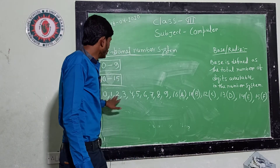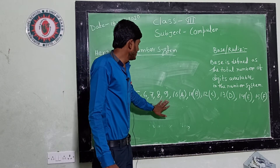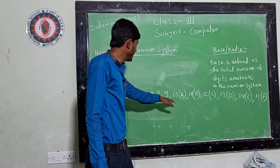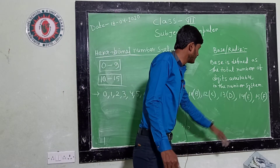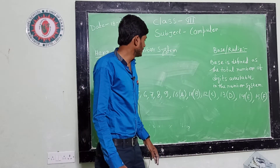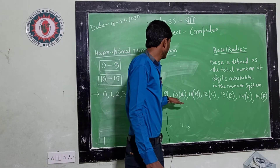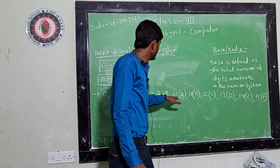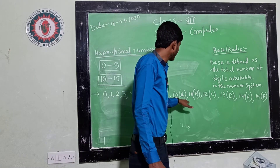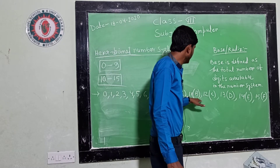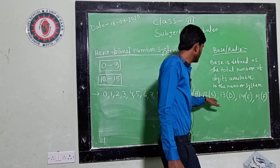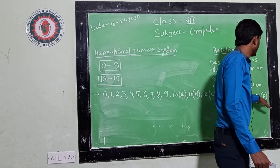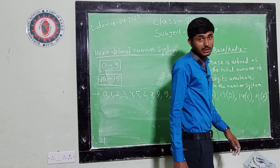From 0 to 9 are expressed as numbers or numerics. And from 10 to 15, those are represented as characters. That means: 10 is represented as A, 11 as B, 12 as C, 13 as D, 14 as E, and 15 as F. That is why the base or radix of hexadecimal number system is 16.